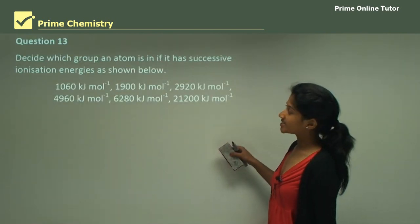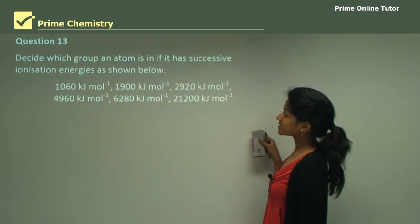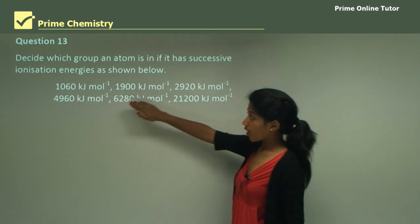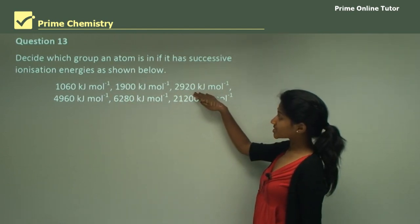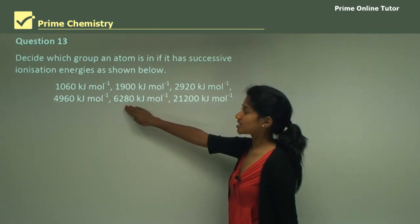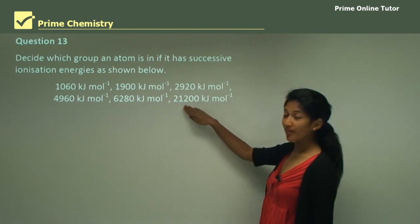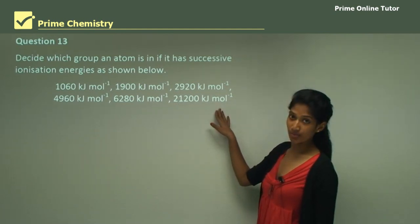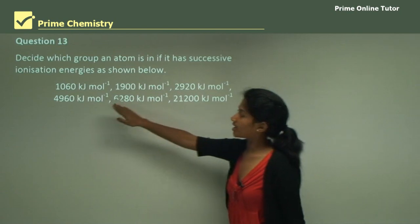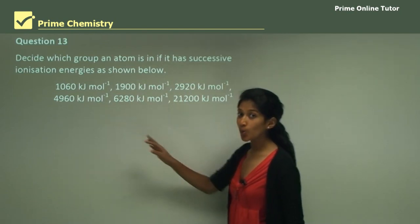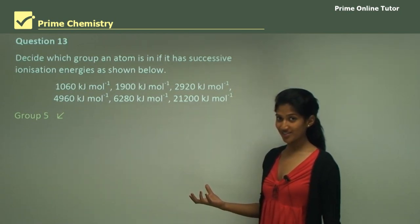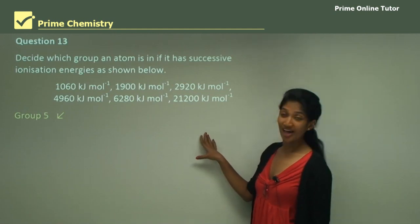Question 13: decide which group an atom is in given these successive ionization energies: 1060, 1900, 2920, 4960, 6280, and 21200 kJ/mol. You need to identify the largest jump. There is nearly a 15000 kJ/mol gap between 6280 and 21200, indicating a shell change after the fifth electron. Therefore, the element is in Group 5 — it has five valence electrons.